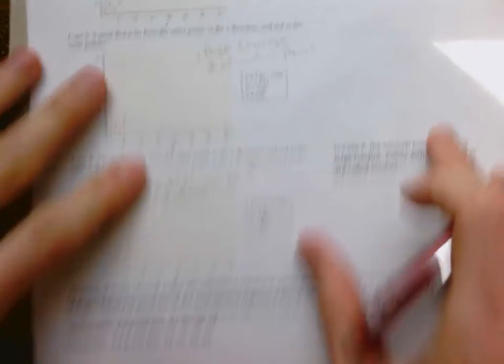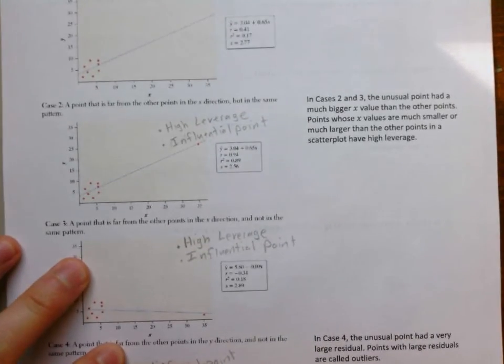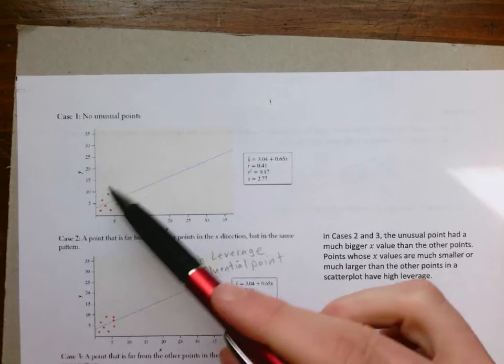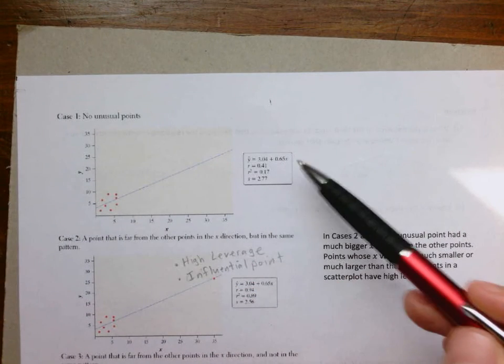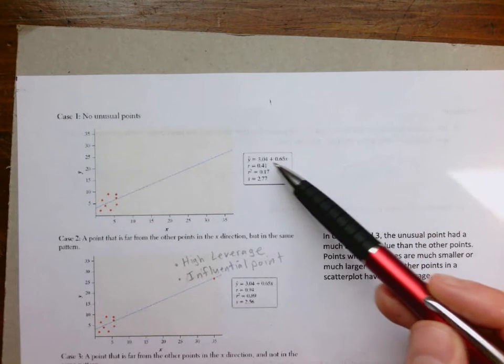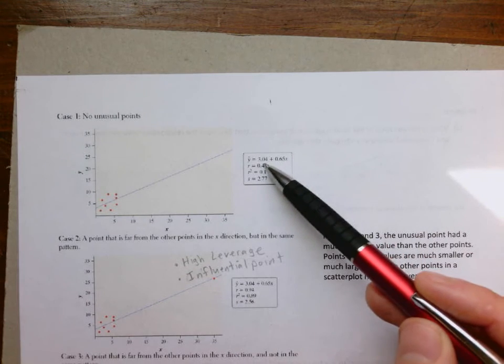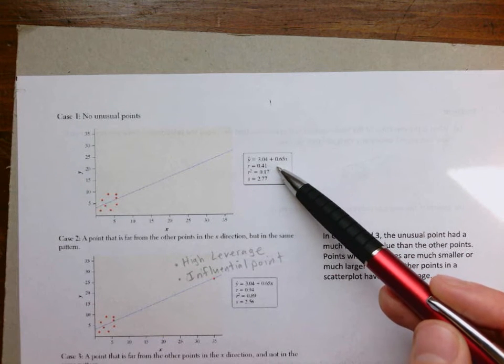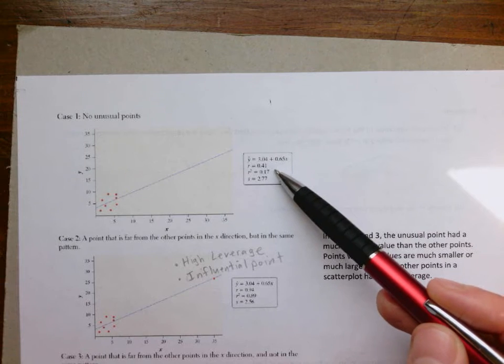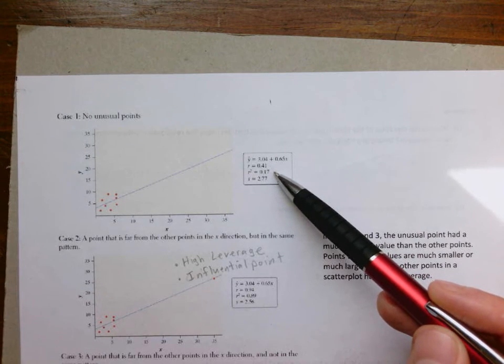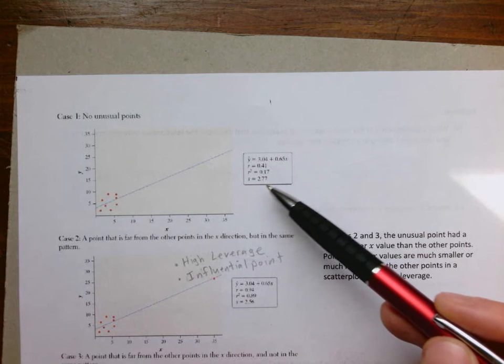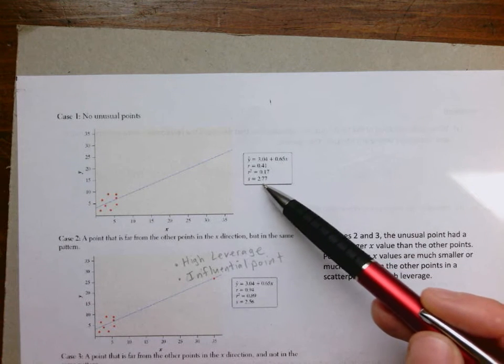If I flip this over, you'll see we have four different cases. In each case, we have a cluster of points and computer output. Looking at our equation for Case 1, this equation looks pretty normal, nothing too crazy there. We have an R value of 0.41, an R squared of 0.17, and an S of 2.77, so a standard deviation of residuals of 2.77.